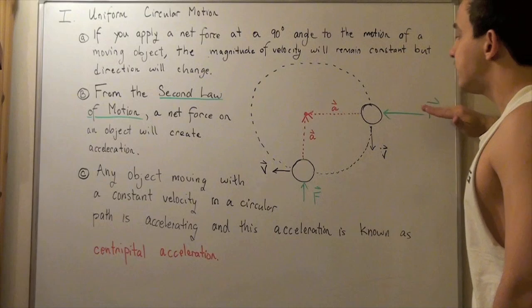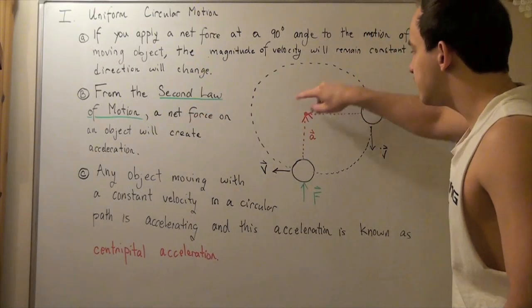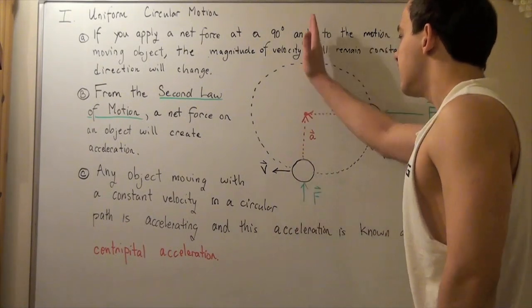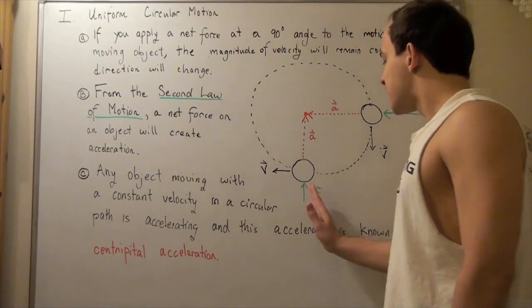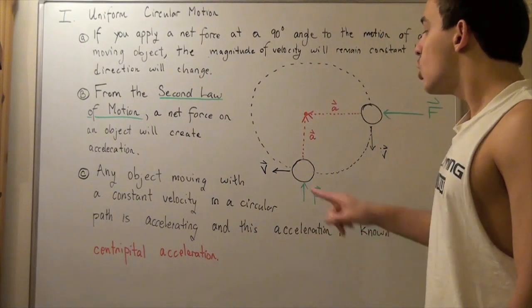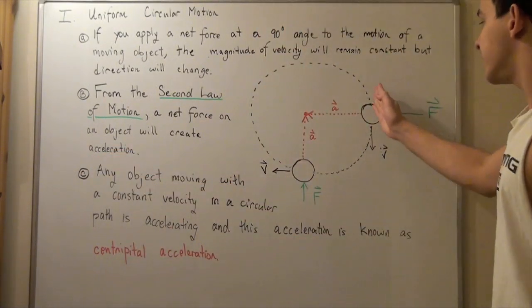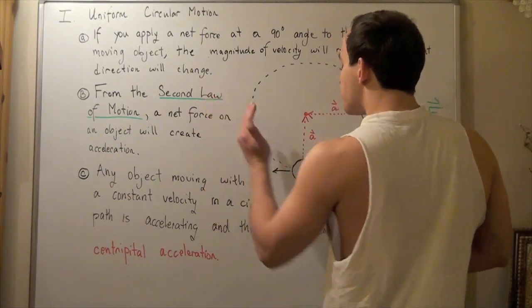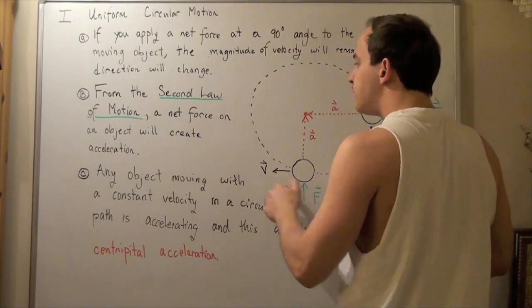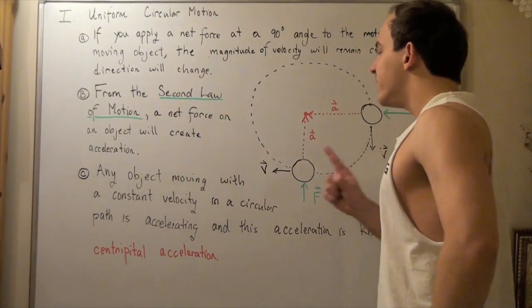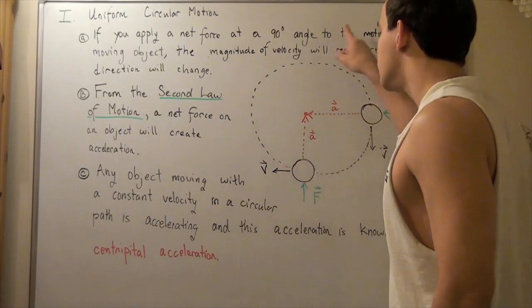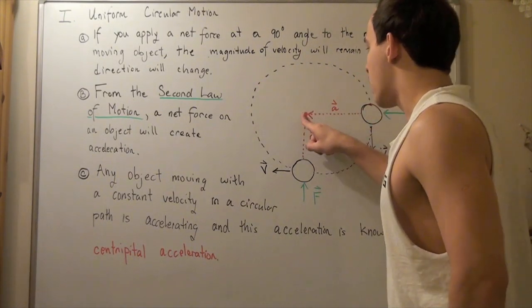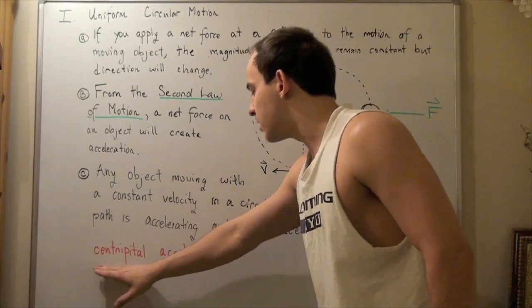Our net force is pointing inward, and that means our acceleration vector must point in the same direction. Now suppose I move my object to a different position — where does the acceleration vector point now? Since my net force is still acting at a 90-degree angle to my velocity, which is now pointing horizontally, my net force will be pointing upward. And at any given point on our circular path, our force will point inward into the center of our circle. Likewise, our acceleration will also point inward. This acceleration is known as centripetal acceleration.